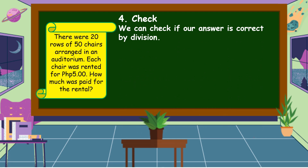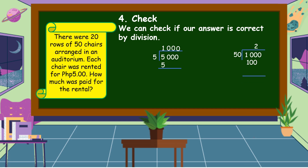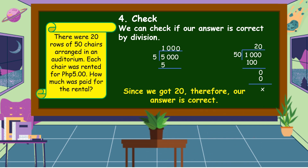The last step is we are going to check. We can check if our answer is correct by using division. So, 5,000 divided by 5: 5 divided by 5 is equal to 1, 1 times 5 is equal to 5, 5 minus 5 is equal to 0, bringing up 3 zeros to our quotient gives 1,000. Next, we divide 1,000 by 50: 100 divided by 50 is equal to 2, 2 times 50 is equal to 100, 100 minus 100 is equal to 0. Bring down 0; 0 divided by 50 is equal to 0. Since we got 20, therefore our answer is correct.